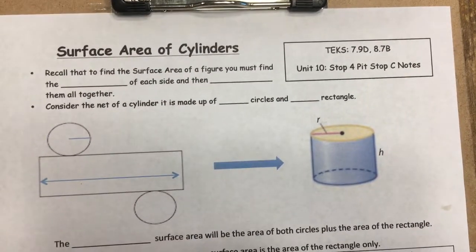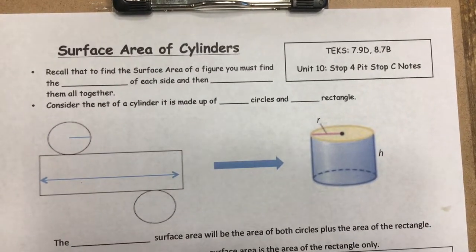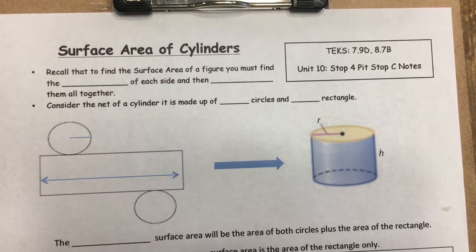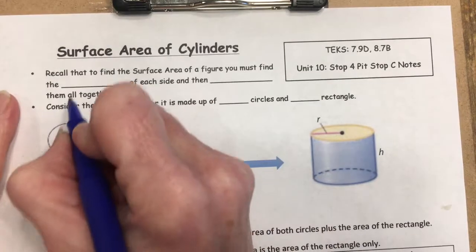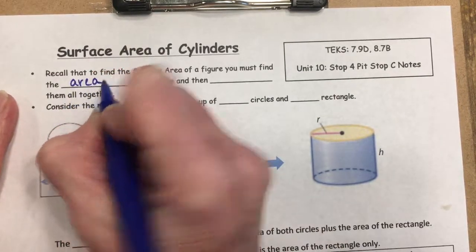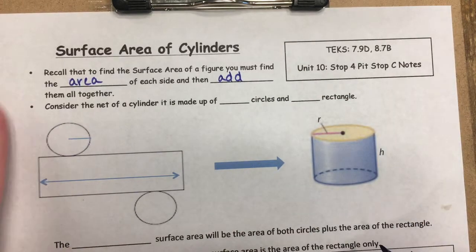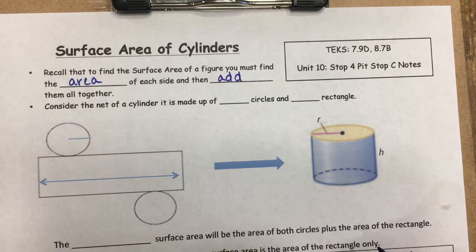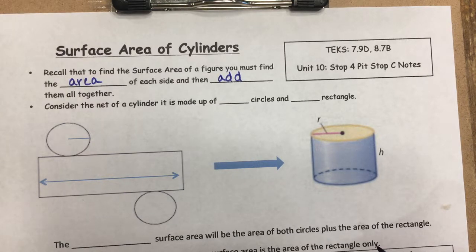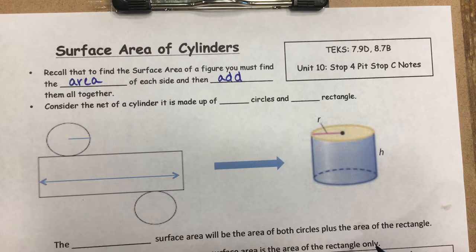Let's talk about the surface area of cylinders. To find the surface area, you find the area of each side of the figure and add them all together — which is the same for cylinders. With cylinders, it's harder to picture what the sides look like, so it's helpful to look at the net, which is what the cylinder looks like when it's cut apart and unfolded.